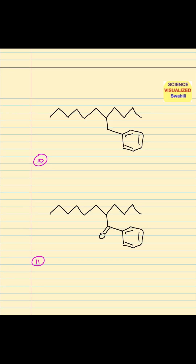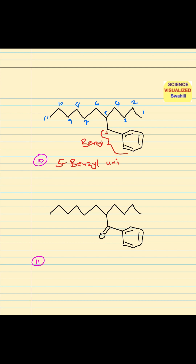Number ten — now we have a straight chain. Counting from the right gives us eleven carbons — undecane, just like before. What we have here is a CH2 group connected to a benzene ring. When you combine these two together, that is called benzyl. So the substituent now is benzyl, and it's on position number five. The name becomes 5-benzylundecane.